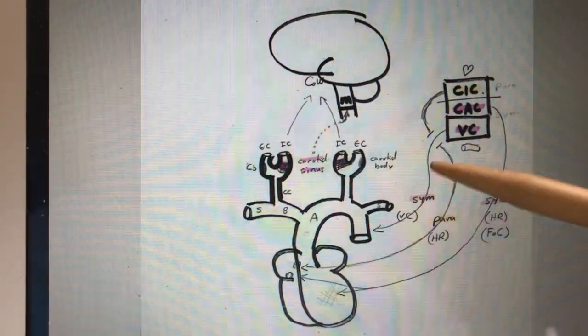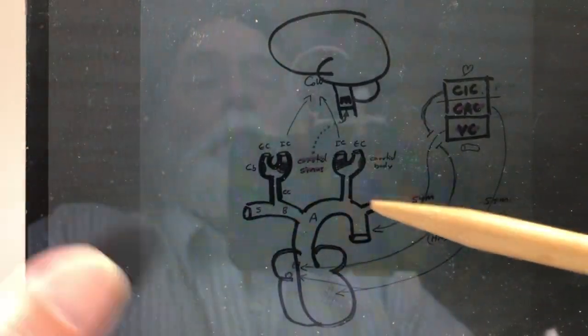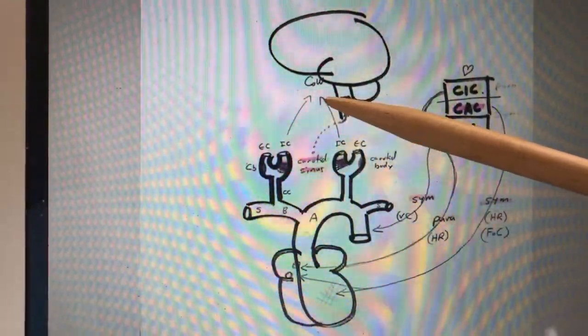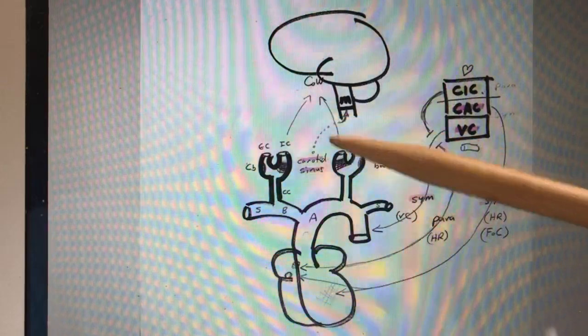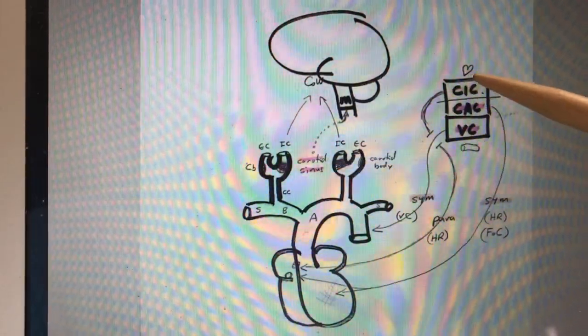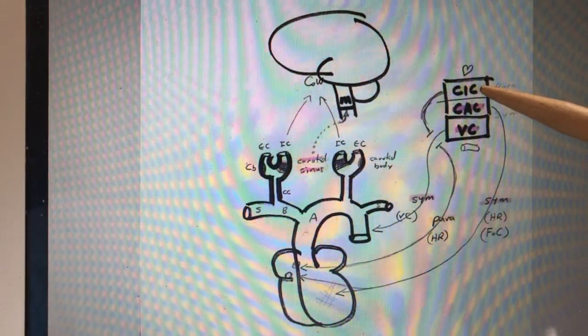Let's take a look at a scenario. Let's say the blood pressure heading towards your brain is higher than it should be, dangerously high, perhaps causing an aneurysm. If the blood pressure here is high, information relayed to the CIC tries to get the CIC to help bring the blood pressure down.